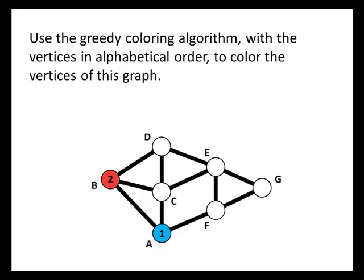Now we're ready to color vertex C. C is connected to A, so we can't use color number one, and C is connected to B, so we can't use color number two, so we have to use color number three. Next up is D. D is connected to B so we can't use number two, and D is connected to C so we can't use number three. You might think we need color number four, but notice that D is not connected to any vertex colored with color number one, so we use the lowest available color, which is color number one.